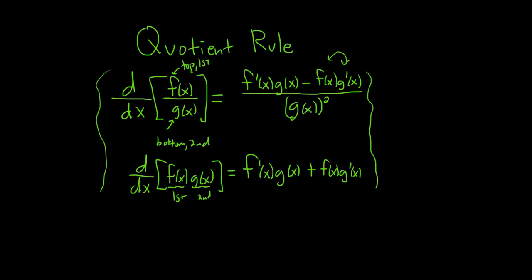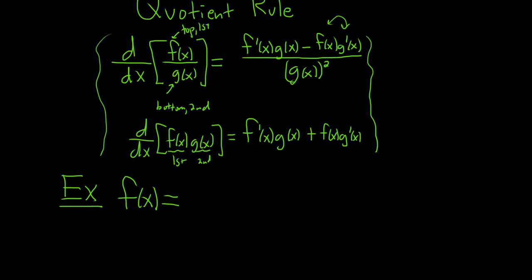Let's do an example of the quotient rule so you see how it works. It's actually not too bad. Say we have f(x) equal to, let's keep it simple, sin x over x. And so we're going to use the quotient rule. So f prime of x.